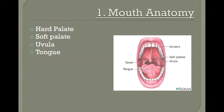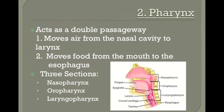Once food passes through the mouth, it turns into something we call a bolus — B-O-L-U-S. This is basically how food gets chewed up, or masticated, and moved to the back of the tongue where it's prepared to enter the second part of the alimentary canal, which we refer to as the pharynx.